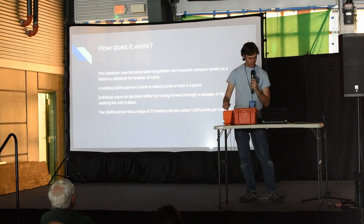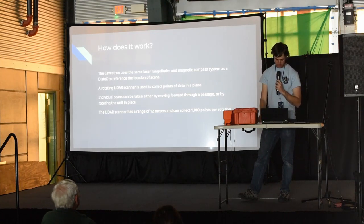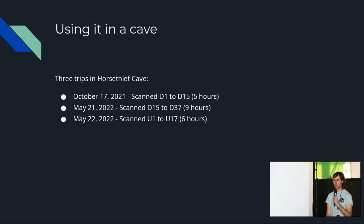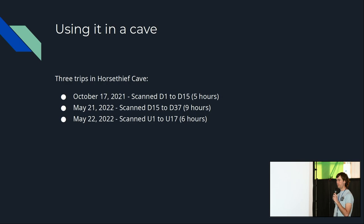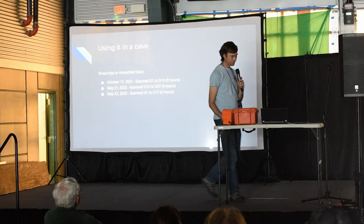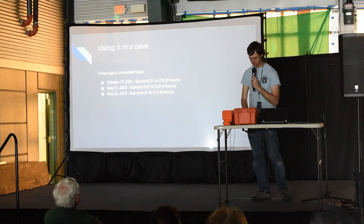This unit has a range of 12 meters and collects 1,000 points per rotation. I've used this in Horse Thief Cave three different times, back in 2021 and 2022, just as a little experimental thing in between the main work of surveying the cave. It's a little faster than really good paper survey, but it's still a pretty slow process — setting up your stations, shuffling along as you're doing the scan. It's not like you're just waltzing through the cave and collecting all your data that way.